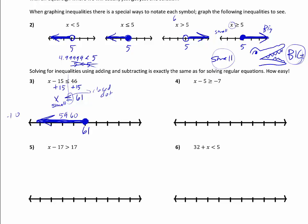For the next problem, x minus 5 is greater than or equal to negative 7. To get rid of minus 5, add 5 to both sides. I get x greater than or equal to negative 2, since negative 7 plus 5 is negative 2. On the graph, that's a closed circle on negative 2. x is getting eaten near the teeth, so x is big — go towards the big numbers to the right. Solutions include negative 1, 0, 1, 2, 3, 103.